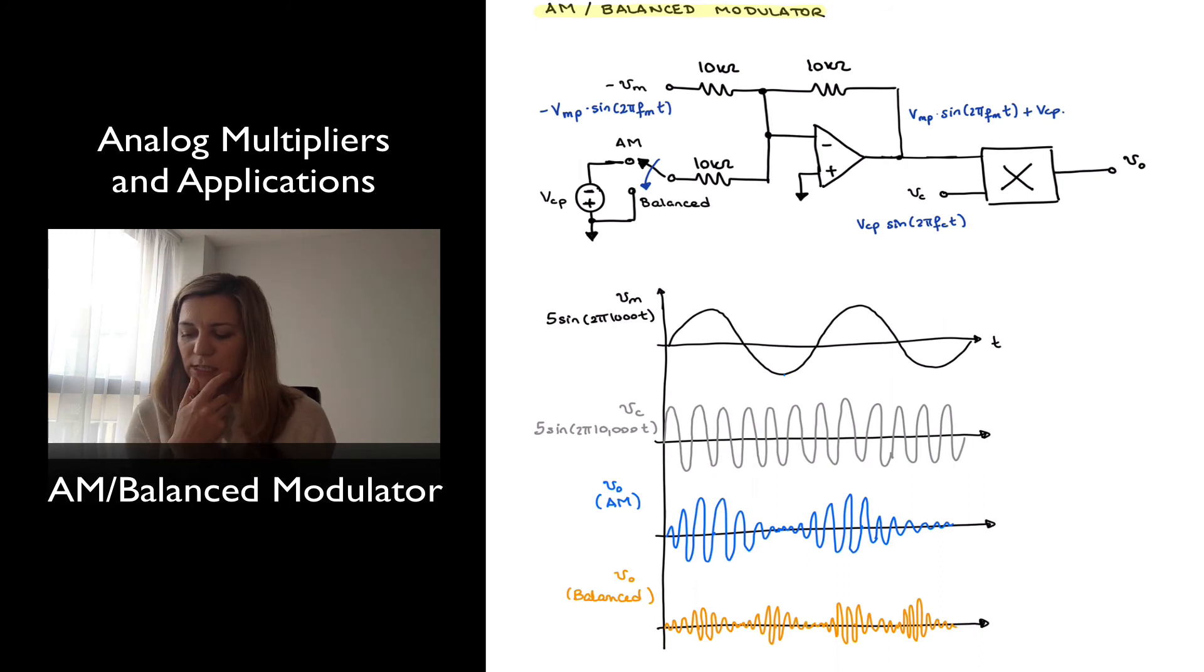And so notice that in both cases, my carrier signal gets modulated. Notice that the one that follows the envelope or that it's enveloped by the modulating signal is the one in balanced modulation.